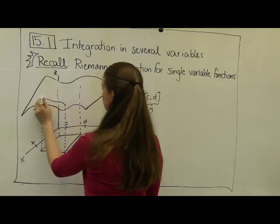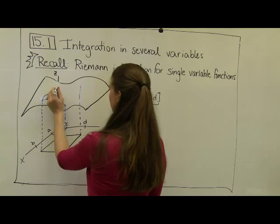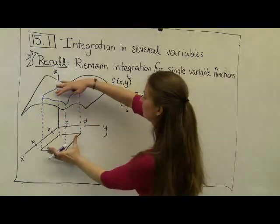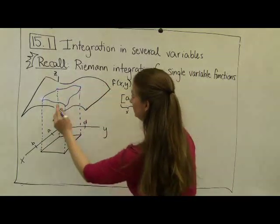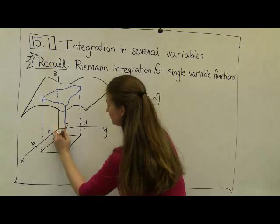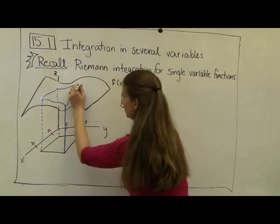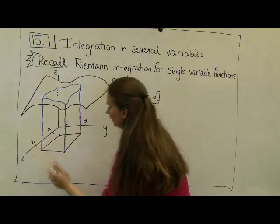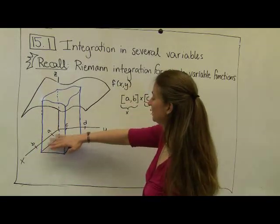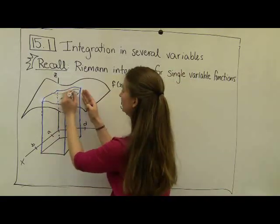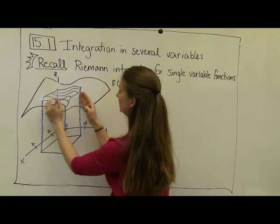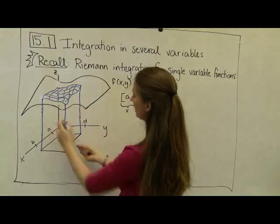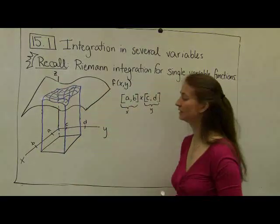Essentially this is a box with a square bottom but a wiggly top. The volume of this object has a base down here in the xy plane, and the height is this wiggly top given by the f of x, y function. And I want to find the volume of whatever this big box region is — that's exactly what my integration is telling me. So how do we go about integrating that?